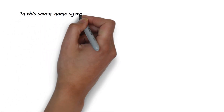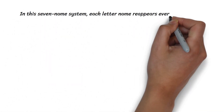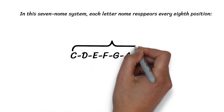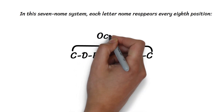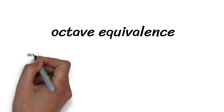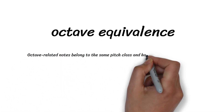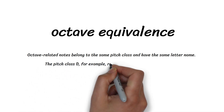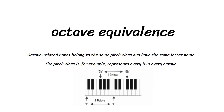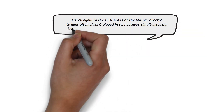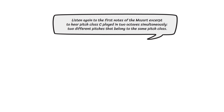In this seven-name system, each letter name reappears every eighth position — 8 below C is another C. Notes eight letter names apart make an octave; they sound similar, a principle known as octave equivalence. Octave-related notes belong to the same pitch class and have the same letter name. The pitch class D, for example, represents every D in every octave. Listen again to the first notes of the Mozart excerpt to hear pitch class C played in two octaves simultaneously — two different pitches that belong to the same pitch class.